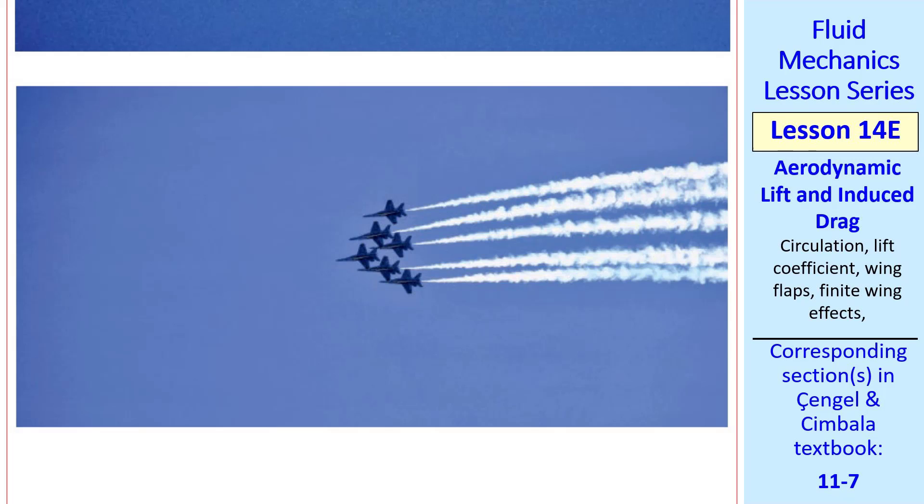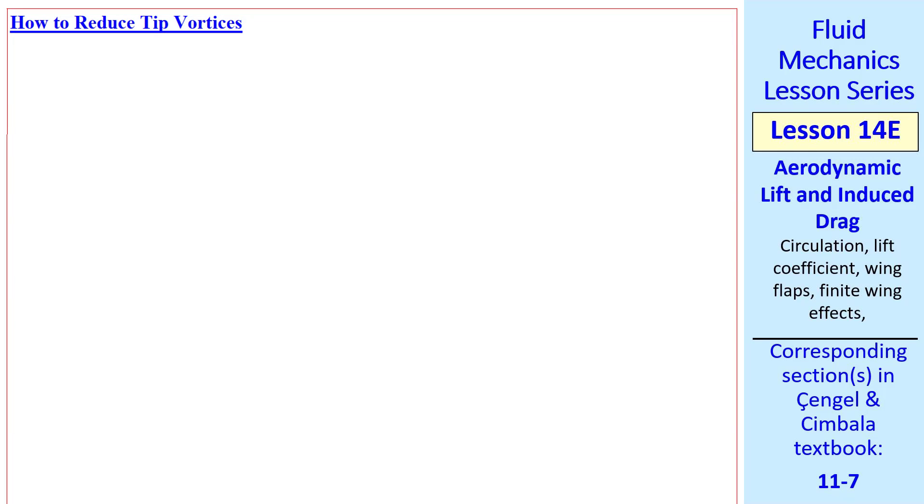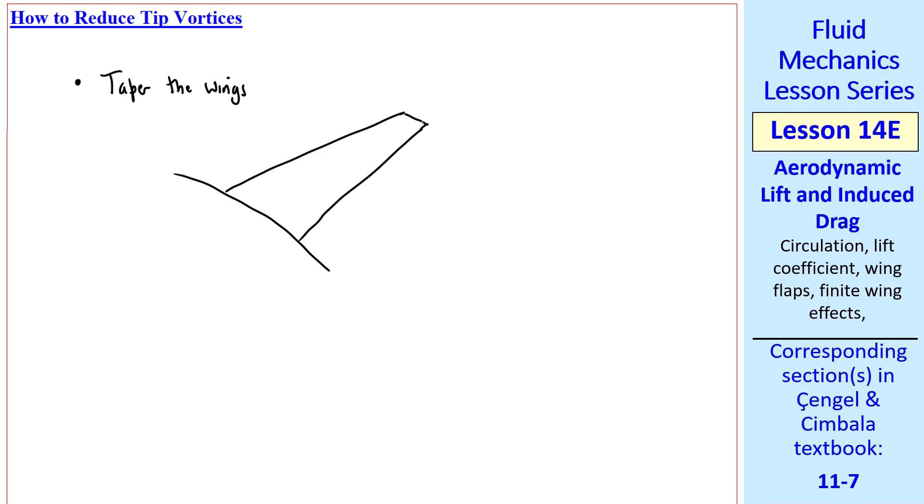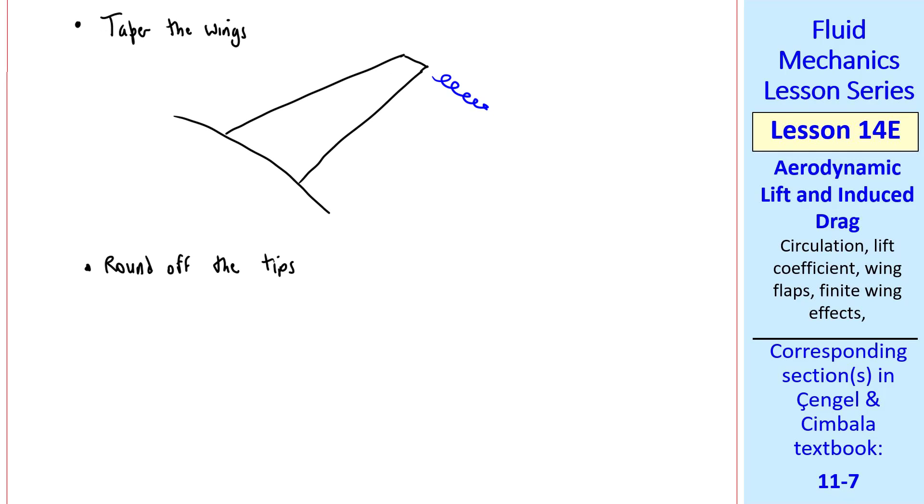Jet fighters often fly in similar formation, especially at air shows. Is there any way to reduce these tip vortices? Yes, there are a number of ways. We can taper the wings. Most wings don't have the same chord all the way out, but they taper towards a smaller chord at the tip. You still have a trailing vortex, but it's much less intense. You can also round off the tips. This makes the tip vortex spread out more. In terms of kinetic energy, you lose less kinetic energy and therefore have less drag.